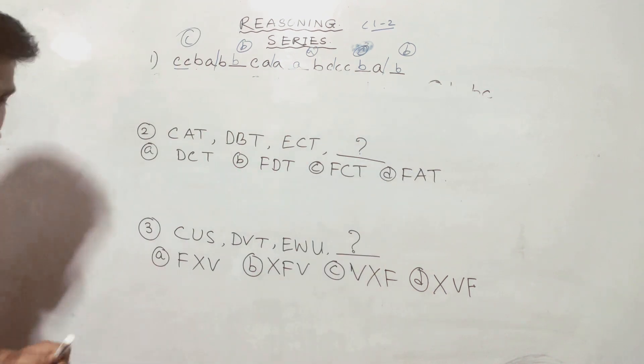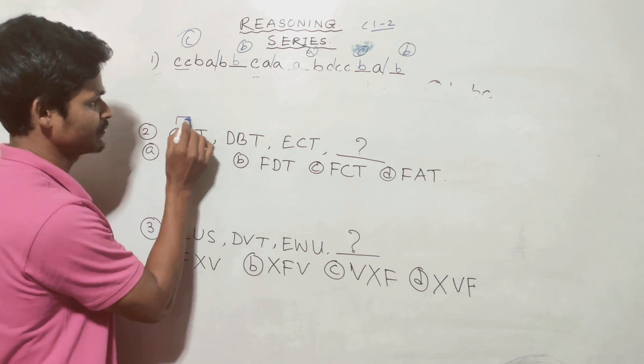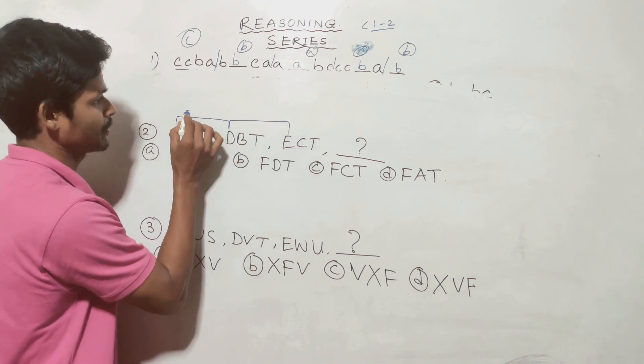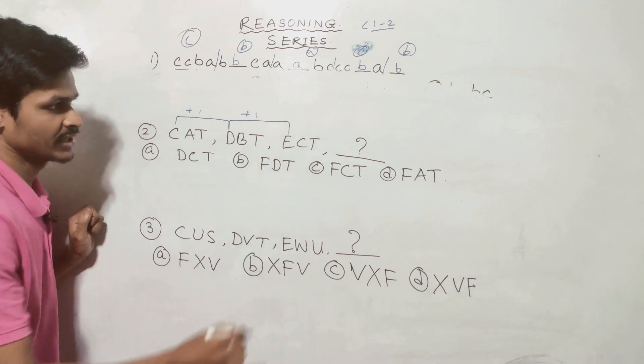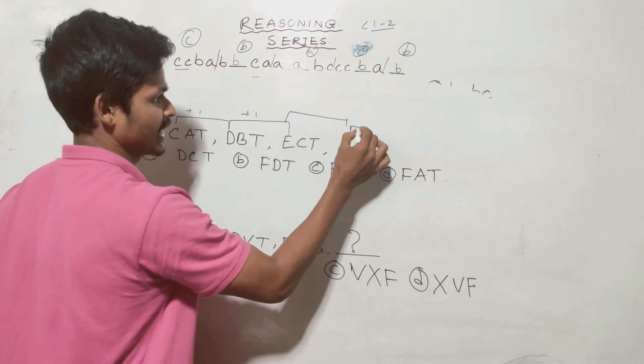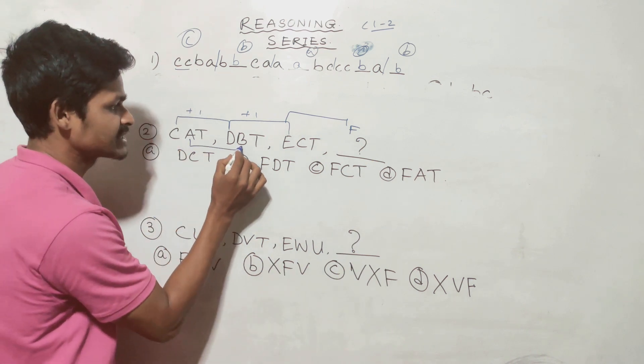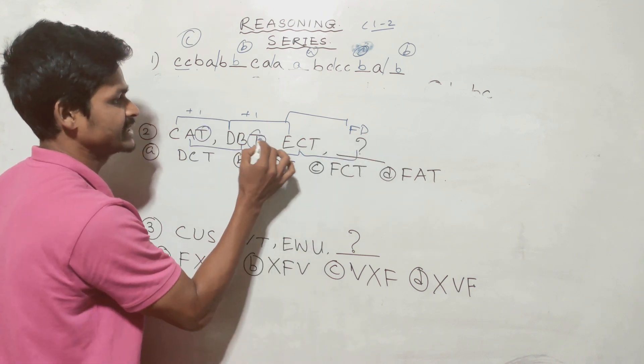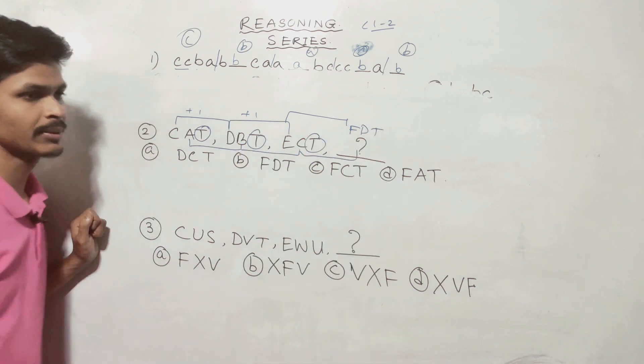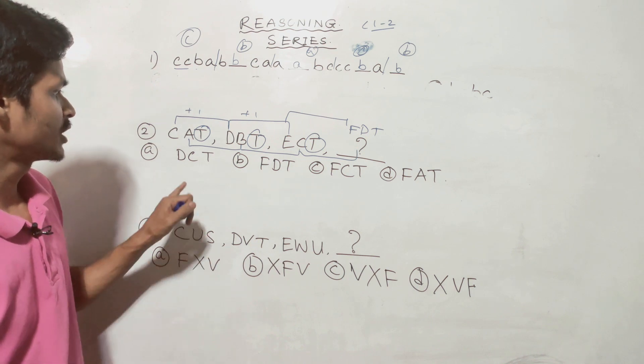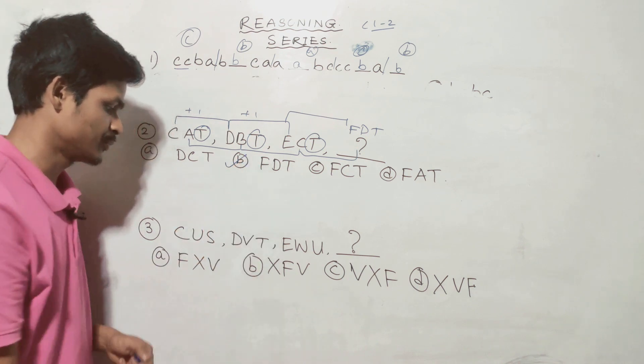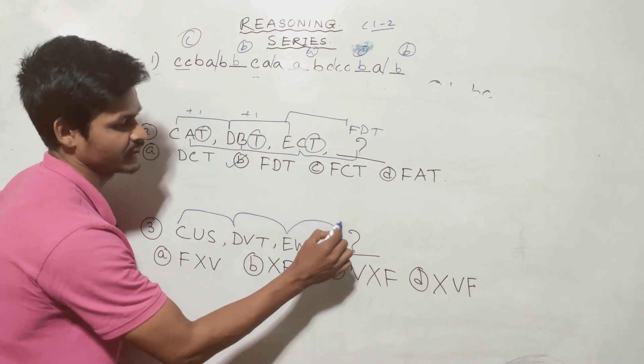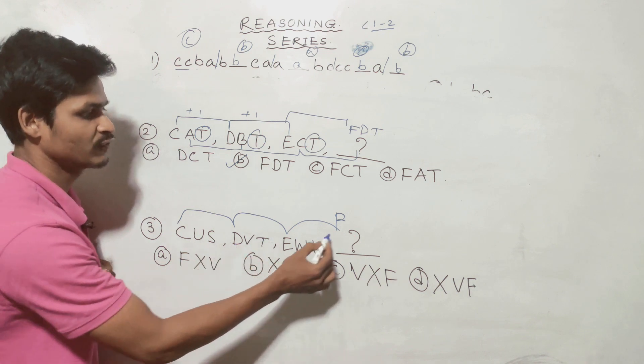Next question is CAT, DGT, EFT. D for I say, get E, plus one plus one. E for title F, as BB for CC for key title D, the same time. The answer is option FDT.